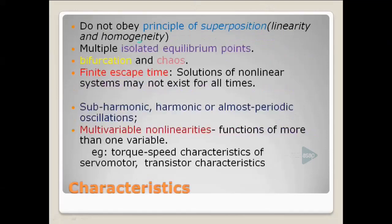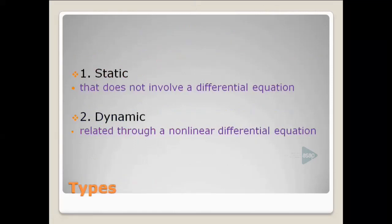Next, the types of non-linear systems. There are two types: static and dynamic. The difference is that a static system does not involve a differential equation, whereas dynamic non-linearity can be represented using a non-linear differential equation. The presence of a differential equation determines whether the system is static or dynamic. In the dynamic case, a non-linear differential equation is essential for modeling.